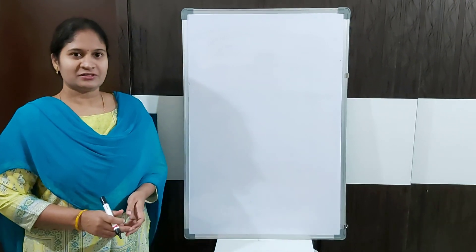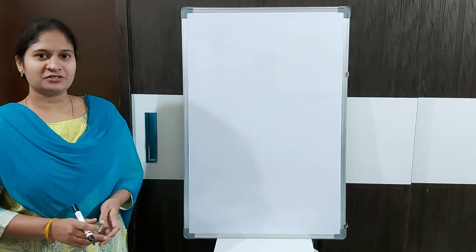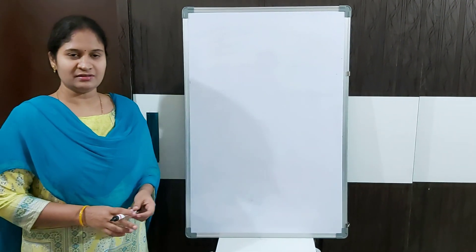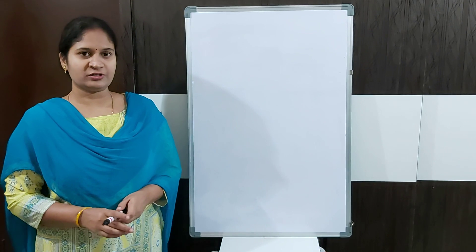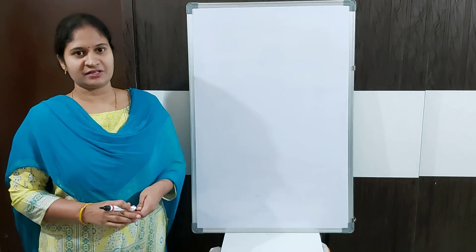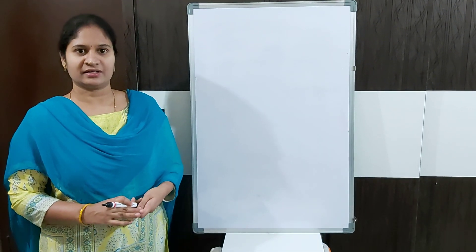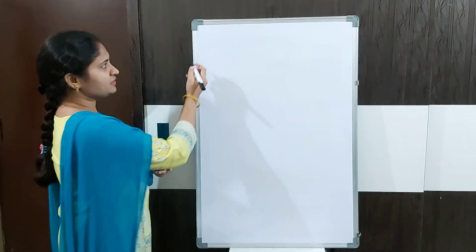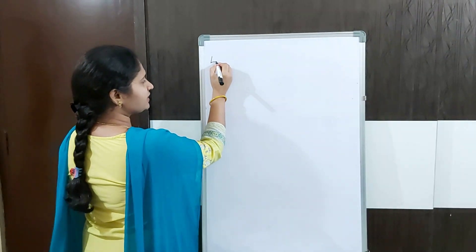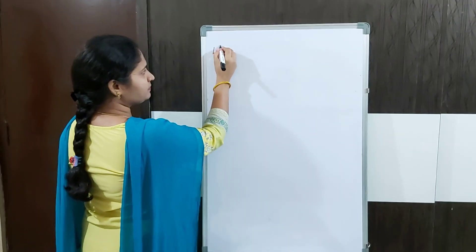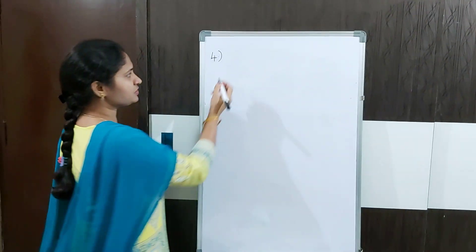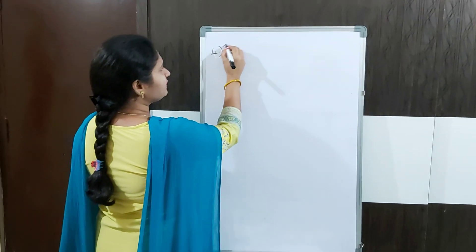Hello children. Continuing with the previous video lesson, now I am going to explain the next representation of given data. Yesterday I explained three representations; the fourth representation is the double bar graph.